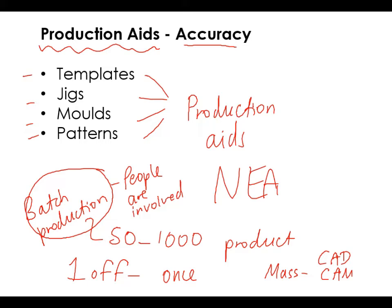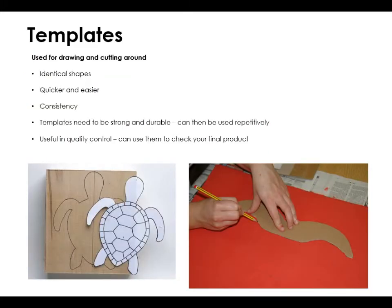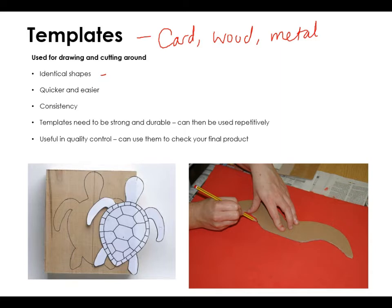Let's talk about each one. So templates, as simple as it sounds, they are used for drawing and cutting around. They give you the identical shape that you need to cut out. They can be made from card, they could be made from wood, they could be made from metal like stainless steel or something like that. The reason they might be made from materials like metal is that you might want them to be quite strong and durable — especially if you're using them on a thousand products, you don't want your little card template to be falling apart.